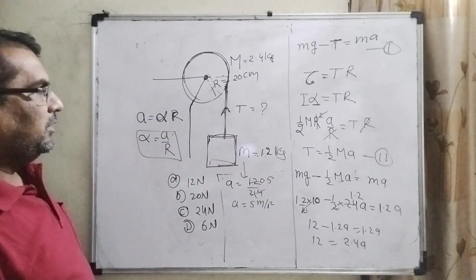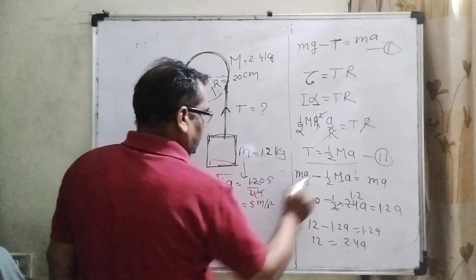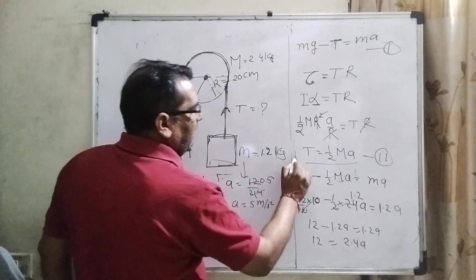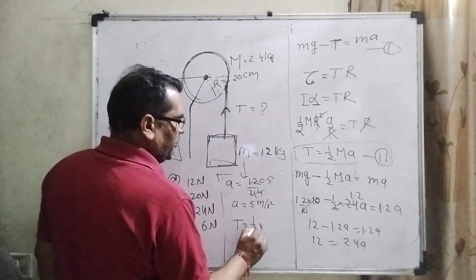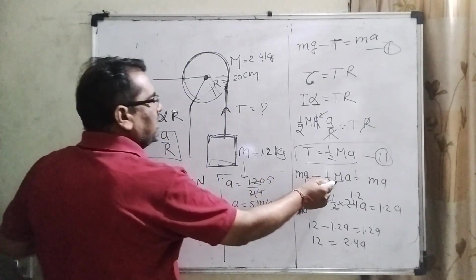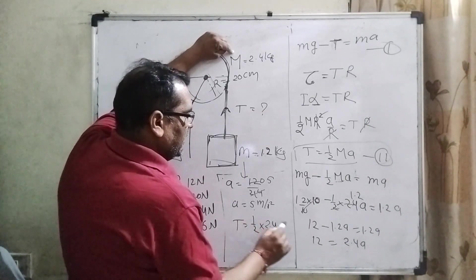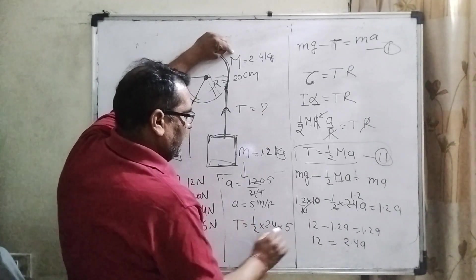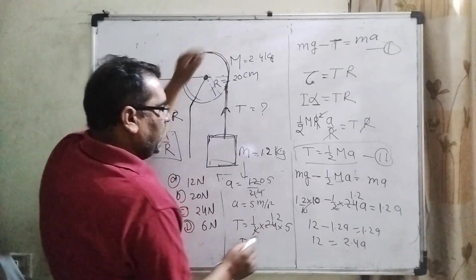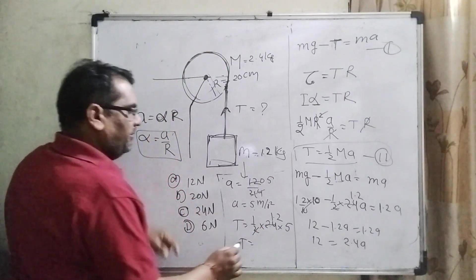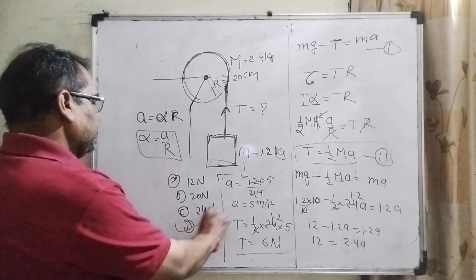Now substitute a = 5 into equation two: T = (1/2) × 2.4 × 5 = 1.2 × 5 = 6 Newton. So the correct option is D, 6 Newton.